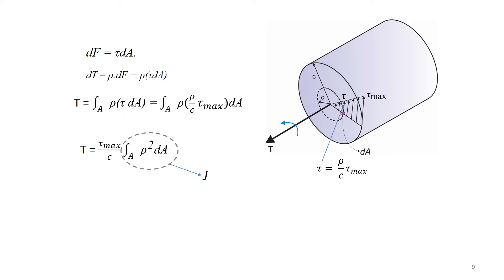It is a property of this cross-section known as the polar moment of inertia, J. Therefore, the torsion formula is given by T equals tau max by the radius of the shaft times J.